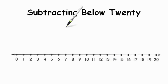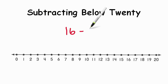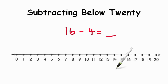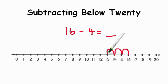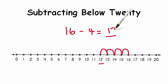For instance, if I gave you the number 16 and I asked you to take away or subtract 4, one strategy we can use is to count back. So we'd start at 16 and we'd count back 4 — 1 hop, 2, 3, 4 — and we land at 12. So the answer is 12. Counting back is a strategy we can use to help us subtract below 20.